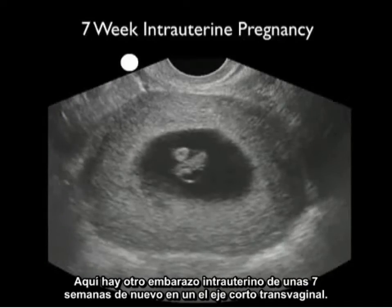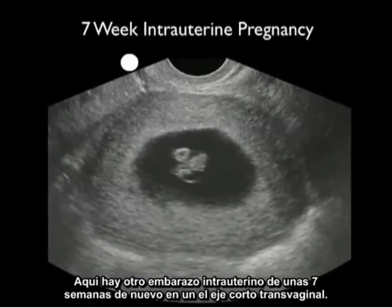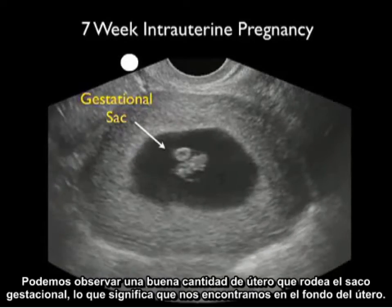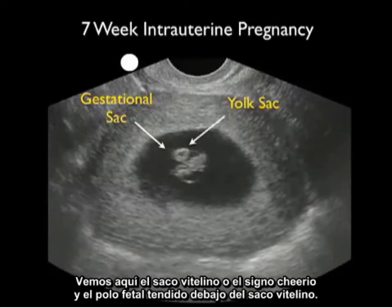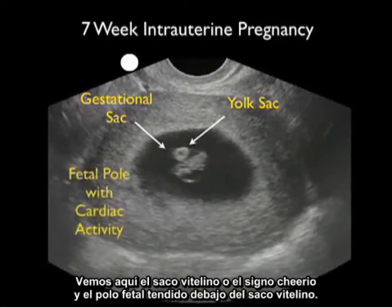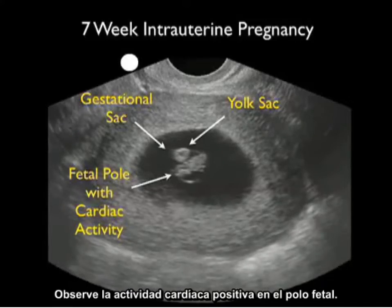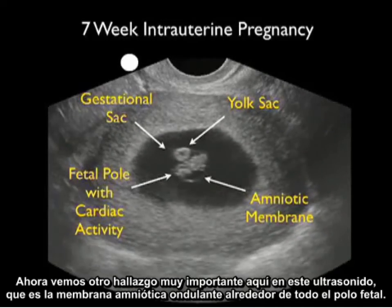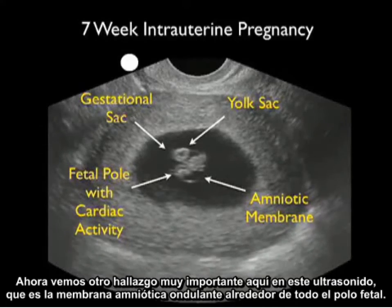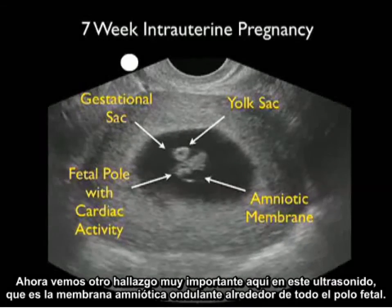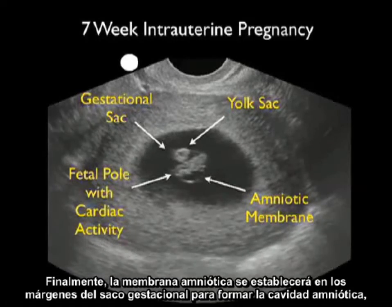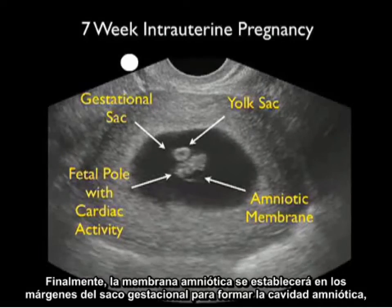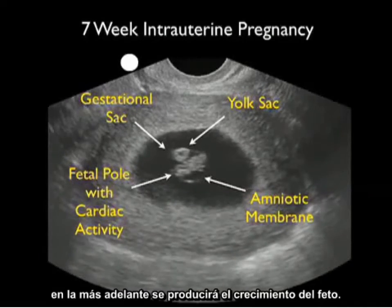Here's another intrauterine pregnancy at about 7 weeks, again in the transvaginal short axis view. Note the good amount of uterus surrounding the gestational sac, signifying the fundal location. We see the yolk sac or cheerio sign and the fetal pole stretched out below the yolk sac, with positive cardiac activity within the fetal pole. We also see a very important finding: the amniotic membrane billowing out from around the fetal pole. Eventually this membrane will plaster down on the margins of the gestational sac to form the amniotic cavity in which further growth of the fetus will occur.